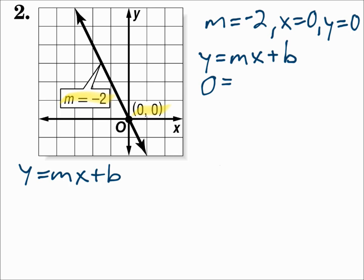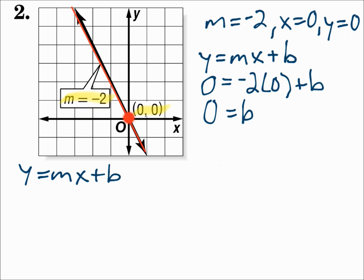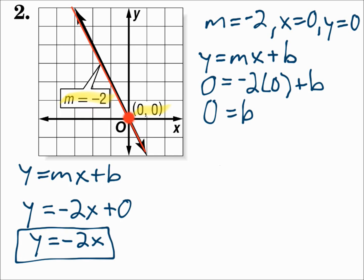y is 0, m is negative 2, x is 0 plus b. Negative 2 times 0 is 0, and 0 plus b is just b. So 0 equals b. You can see in the line it crosses the y-axis at 0 — the y-intercept is 0. Now substitute m: y equals negative 2 times x plus b is 0. Simplify — you don't want to say negative 2x plus 0, just say negative 2x. So y equals negative 2x.